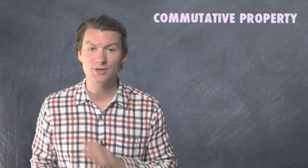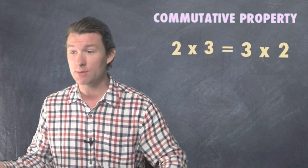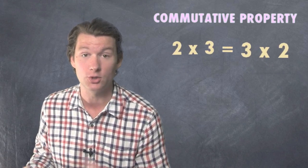The commutative property is all about how order doesn't matter. If you're adding a bunch of numbers, it doesn't matter what order you do it. If you're multiplying a bunch of numbers, it doesn't matter what order you do it.